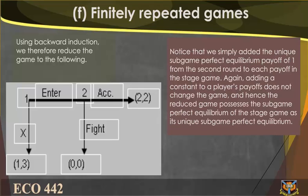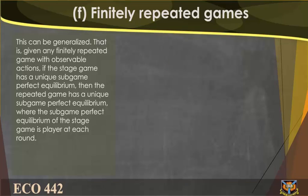Using backward induction, we reduce the game by adding the unique subgame perfect equilibrium payoff of 1 from the second round to each payoff in the stage game. Adding a constant to a player's payoffs does not change the game, and hence the reduced game possesses the subgame perfect equilibrium of the stage game as its unique subgame perfect equilibrium. This can be generalized: given a finitely repeated game with observable actions, if the stage game has a unique subgame perfect equilibrium, then the repeated game has a unique subgame perfect equilibrium where the stage game equilibrium is played at each round.